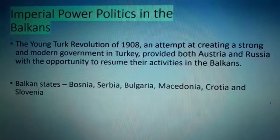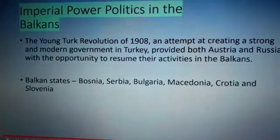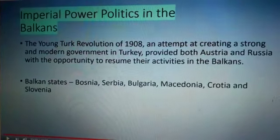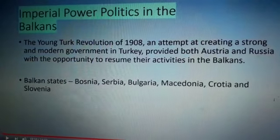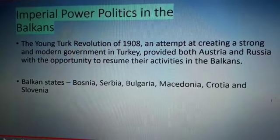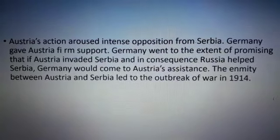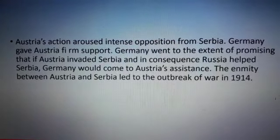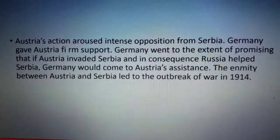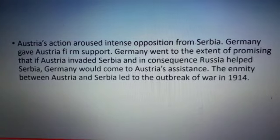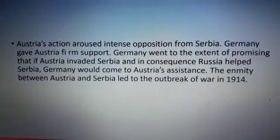Imperial politics in the Balkans. The Balkan states — Bosnia, Serbia, Bulgaria, Macedonia, and Slovenia — were collectively under the control of Turkey. After the Young Turk Revolution, both Austria and Russia were permitted to resume their activities in the Balkans. Russia supported Austria for a sea route in the Mediterranean Sea. Austria annexed Bosnia and Herzegovina, and Serbia opposed Austria's action. Russia supported Serbia, while Germany supported Austria. This led to the outbreak of World War I in 1914.